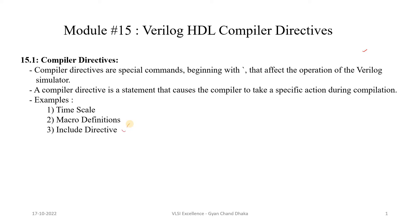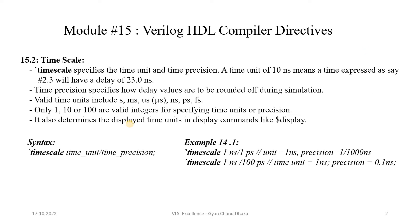First, let's understand the timescale compiler directive. The timescale directive specifies two things: the time unit for the simulation, and the time precision. Time precision specifies how delay values are going to be rounded off during simulation, and also specifies the minimum or smallest delay which the simulator can accept.